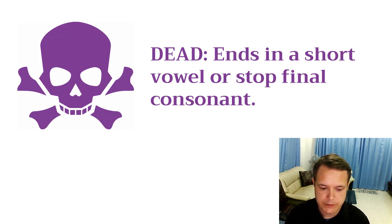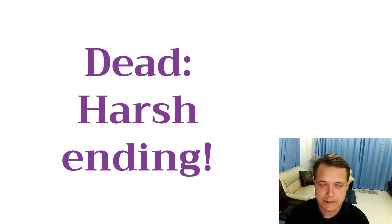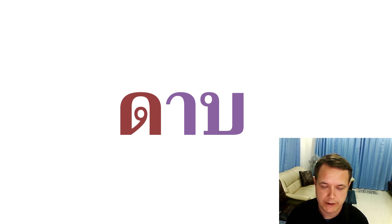The next piece of information we need to know is what a dead and live syllable are — this will help us determine the tone if there's no tone mark. A dead syllable is a syllable that ends with a short vowel or a stop final consonant. We can summarize it by saying it has a harsh ending. For example, a short harsh vowel is dead, and a long vowel that ends in a final stop consonant also ends hard — that is dead.